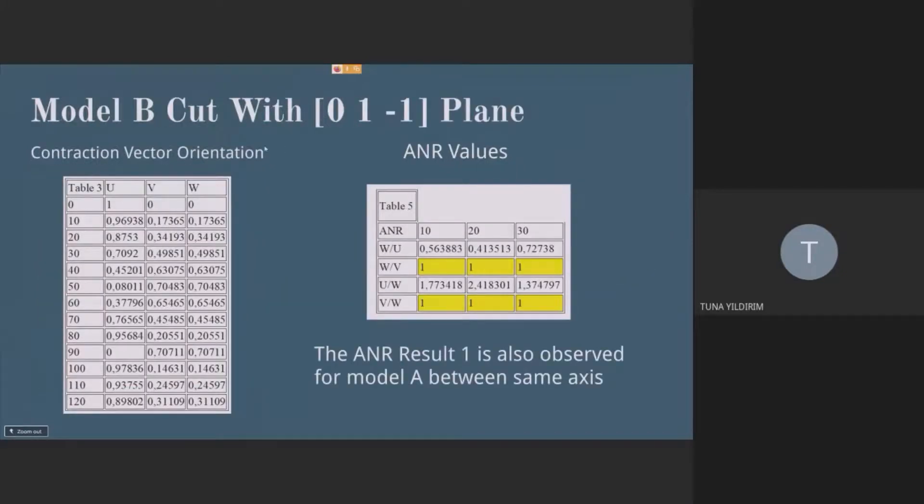But when we apply a cut for model B, we get the anisotropic ratio of 1. The experimental team also got this result when they applied this cut. So this is nice to see that the model and the experiment match.